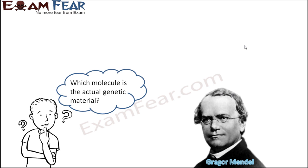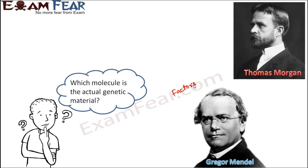The first experiments on genetics were performed by Gregor Mendel. Mendel gave a term called factors, which later came to be known as genes. As per Mendel, factors were the ones which carry the genetic material from one generation to the next. After Mendel, many other scientists came, one of the prominent ones being Thomas Morgan. Morgan gave the chromosomal theory of inheritance and spoke about genes and chromosomes playing a very important role in inheritance.